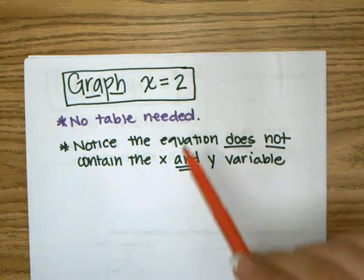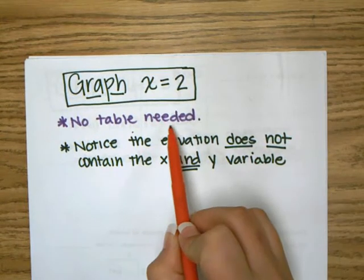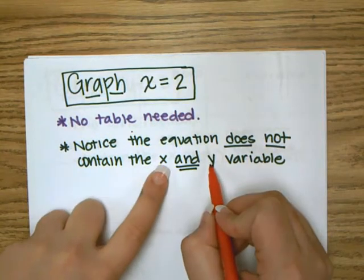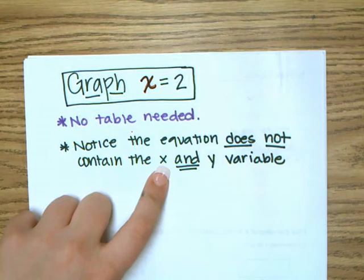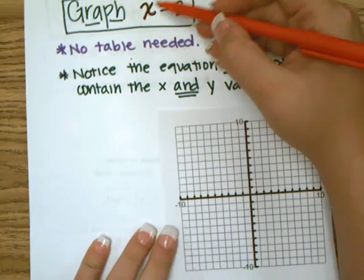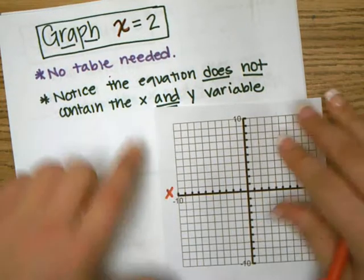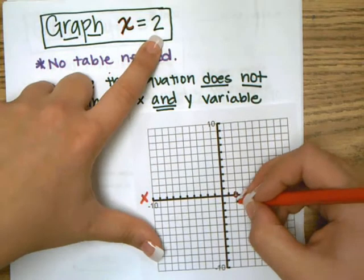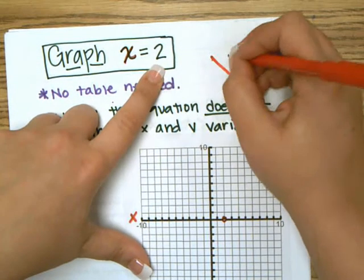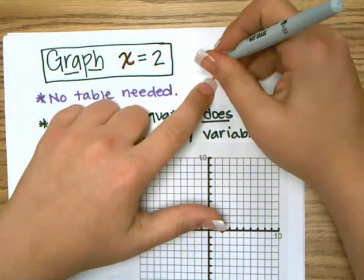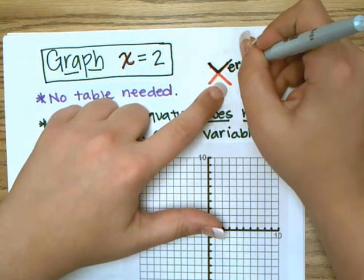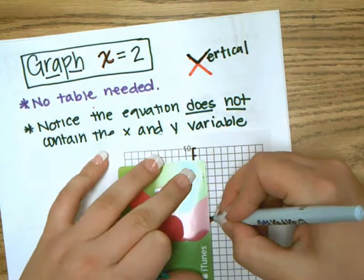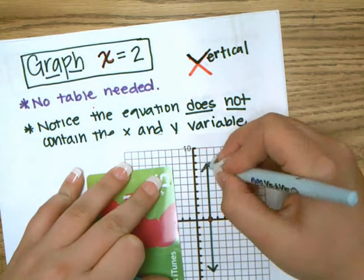Our next graph, we're going to graph x equals two. There should be something very noticeably different with this equation. There is no table needed because the equation does not contain an x and a y — it only has an x. So to graph it, we're going to go to the x-axis and go to two — and we're going to make a vertical line. My little trick to remember is that when I look at an x, I see a V for vertical, so I know it's going to be a vertical line.